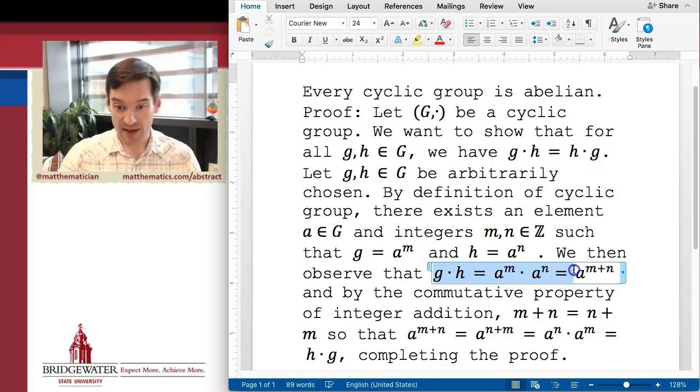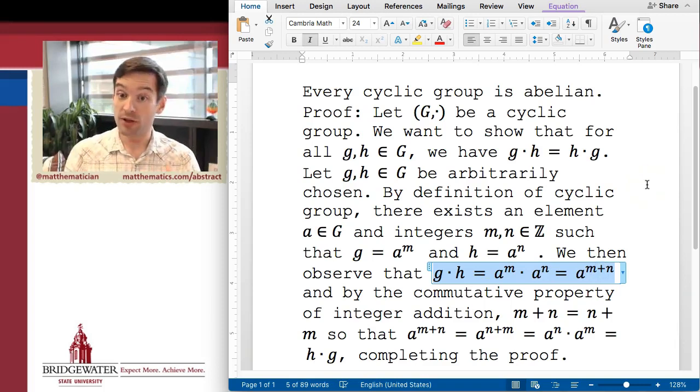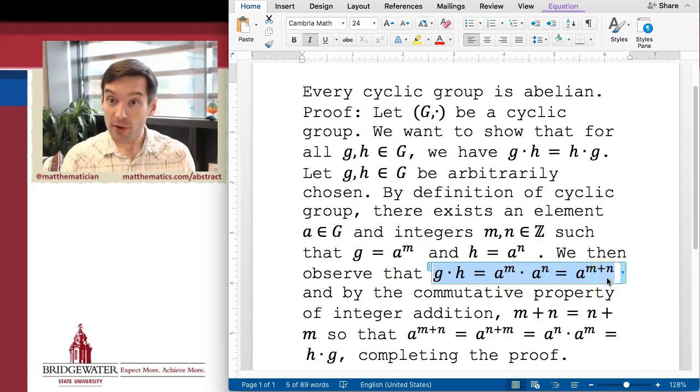But the further down that I get, there are some obvious candidates that jump out to me as things that probably should live on a line by themselves, like this long equation. So g times h is equal to a to the m times a to the n is equal to a to the n plus n. This is really a crucial part of my argument, and it's also a much longer mathematical equation than the things that come before it.